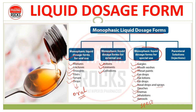कि particular कुछ special use हो, तो उसके लिए हम उनको use करते हैं. और parenteral preparations जो है, जितने भी parenteral solutions हैं — जैसे कि detail में हमने parenteral chapter से पढ़ा, जैसे कि large volume parenteral and small volume parenteral — तो दोनों parenteral preparations खास कर जो हैं, वो monophasic liquid dosage form ही हैं. Monophasic मतलब कि जिसके अंदर एक ही phase है, only one phase.